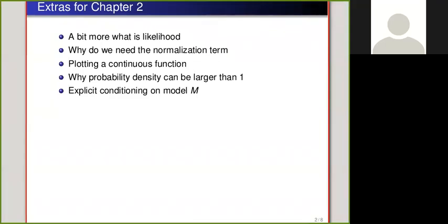Hello, this is an extra video for chapter 2 based on feedback from chat and Q&A session. A little bit more about what is likelihood, why we need the normalization term, plotting a continuous function, why probability density can be larger than 1, and why we sometimes explicitly condition on model M.